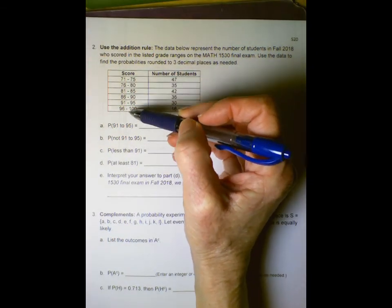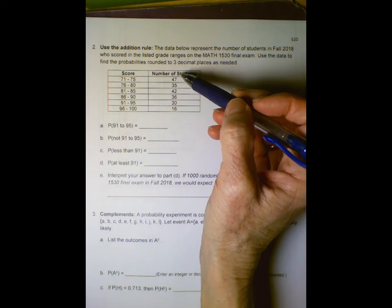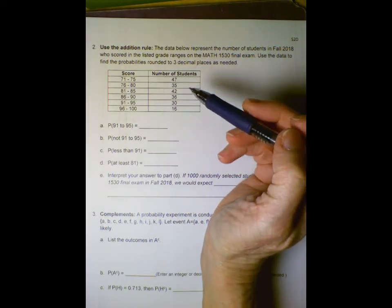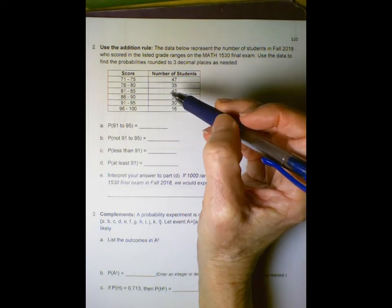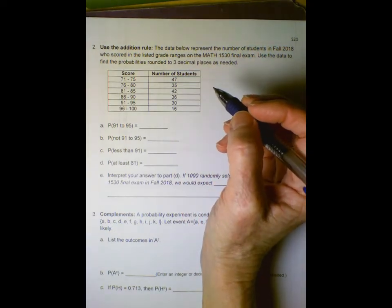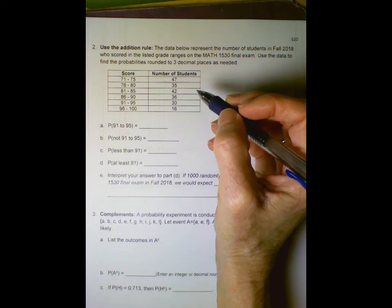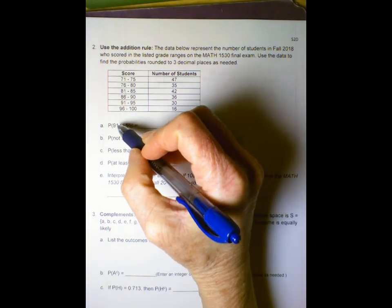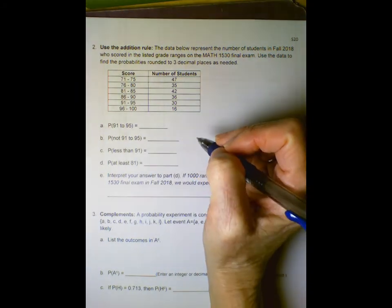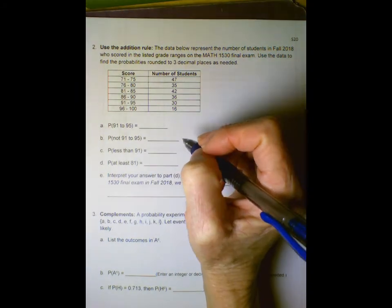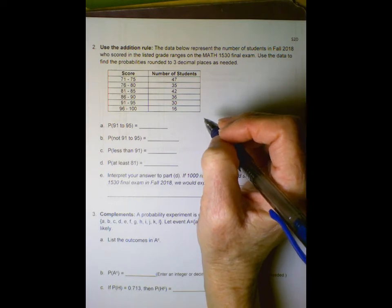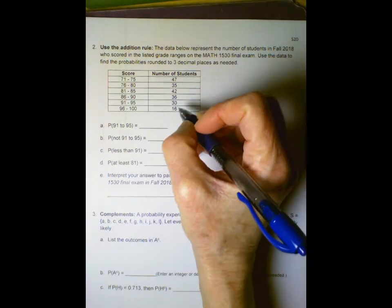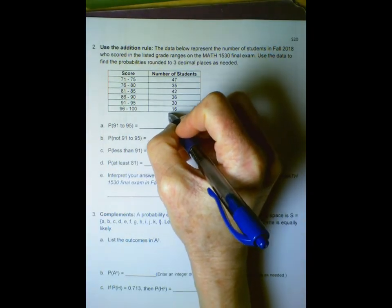To find probabilities, we're going to use relative frequencies. In the numerator, we'll have the number of times the event we're interested in occurred, and the denominator will have the total. The first thing we need to do is get the sum. With our calculator, that sum is 206.